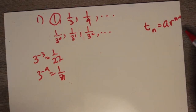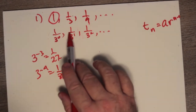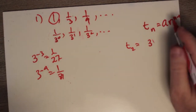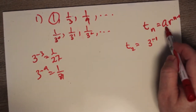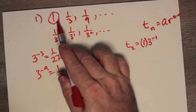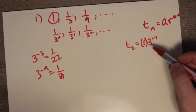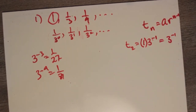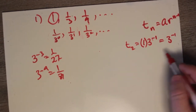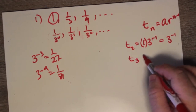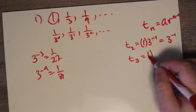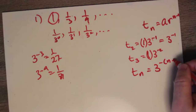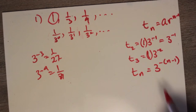Let's verify through the formula. Looking at the second term, t2 is 3 to the minus 1. The first term was 1, so when you multiply by 1, it doesn't change anything. So this is just 3 to the minus 1. Similarly, t3 is 1 multiplied by 3 to the minus 2. So tn is really just 3 to the negative (n minus 1). That's the general formula.